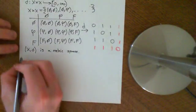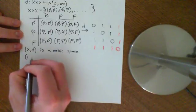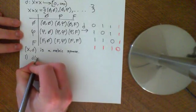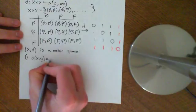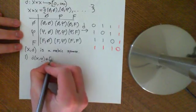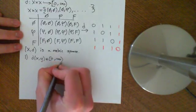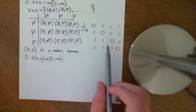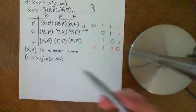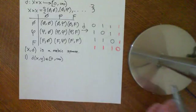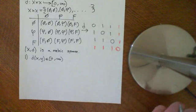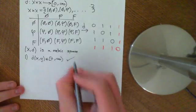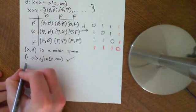The first axiom: the distance between two points x and y is going to be an element of the non-negative real numbers. That's pretty obvious, because the distance is going to be zero if they're the same, or one if they're not the same. Zero and one are both elements of the non-negative real numbers, so that axiom is satisfied.